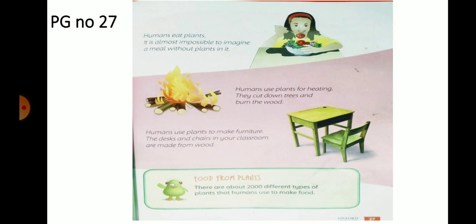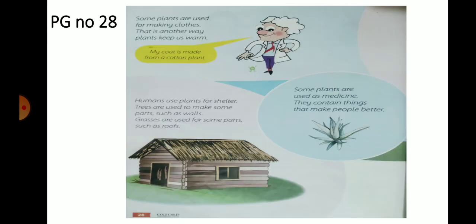Food from plants. There are about two thousand different types of plants that humans use to make food. Some plants are used for making clothes — that is another way plants keep us warm. Kuch plants jo hain wo clothes banane ke liye bhi istamal hote hain, jinse hum apne aap ko garam rakhte hain, jaise ke cotton.